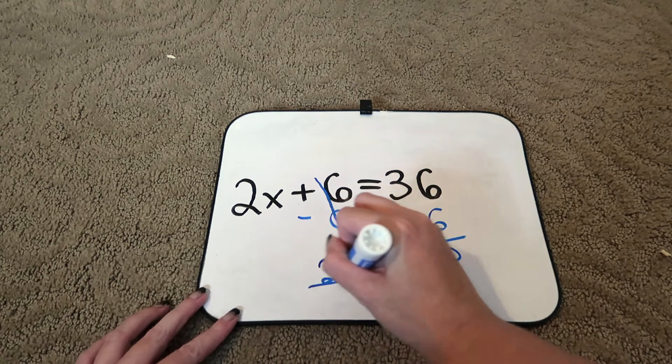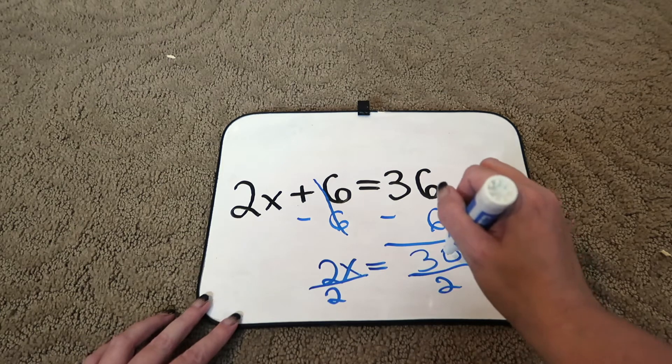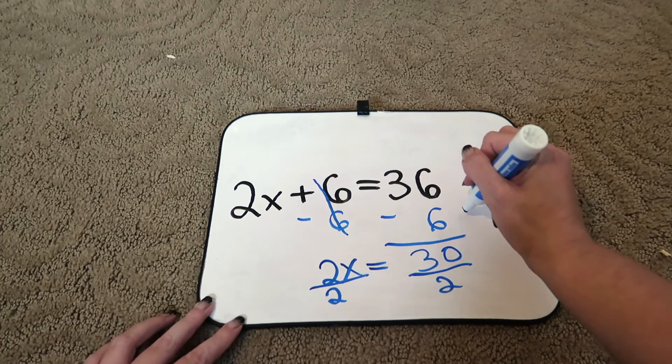So we're going to divide by 2. Divide by 2. And now we're going to divide 30 by 2.